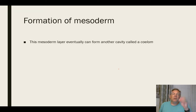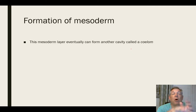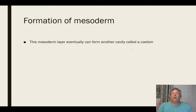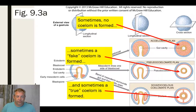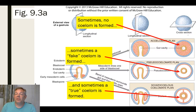When organisms form mesoderm, that mesoderm can eventually form a whole new cavity called the coelom. This is another clue to the development and relationships among organisms. In the protostomes, sometimes they don't form a coelom — they form mesoderm, but not a coelomic cavity. That's called the acoelomate plan. In this case, the mesoderm starts down near the blastopore but just fills up the whole cavity, so you don't have a coelomic cavity.